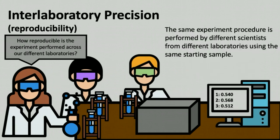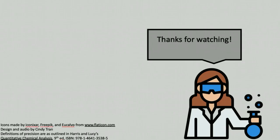In summary, interlaboratory precision requires that the same sample be analyzed using the same protocol by multiple scientists across multiple laboratories. These analyses can be done on different days with different instruments, and the end results will determine the reproducibility across a system of laboratories. While there are more possible experimental designs that can measure precision of specific parts of a protocol, this video has covered the four main types of precision. Thanks for watching!